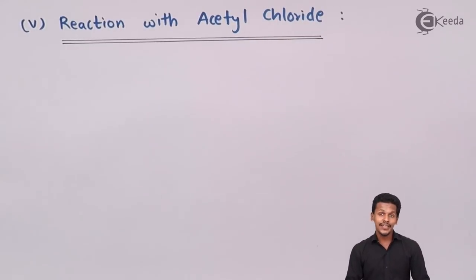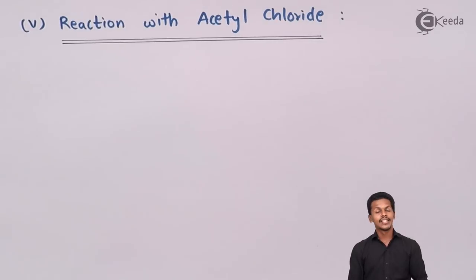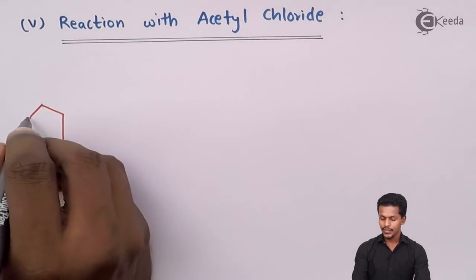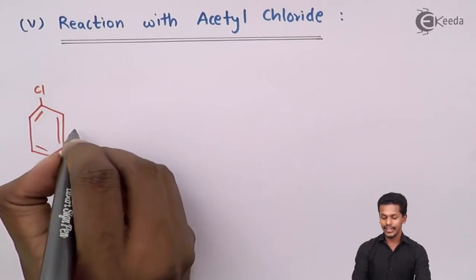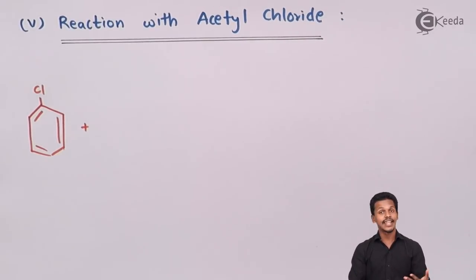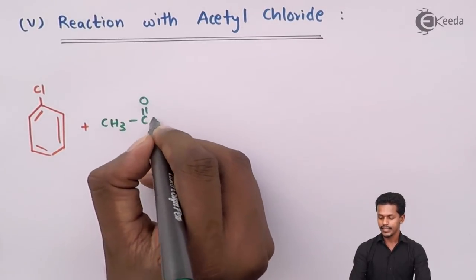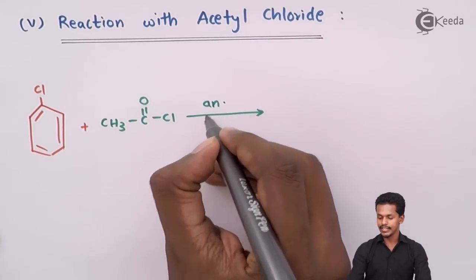The reaction of chlorobenzene with acetyl chloride, again in the presence of anhydrous AlCl3, is known as Friedel-Crafts acylation. Let us see what product we could get. Suppose we use chlorobenzene and react it with acetyl chloride, represented as CH3-C(=O)-Cl, in presence of anhydrous AlCl3.